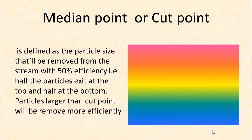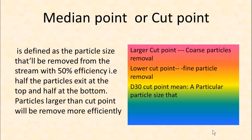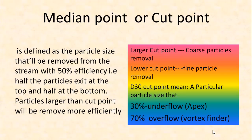A larger cut point means coarse particle removal, while a lower cut point means fine particle removal. A D30 cut point means the particle size that will have 30% underflow from the apex and 20% overflow from the vortex finder.